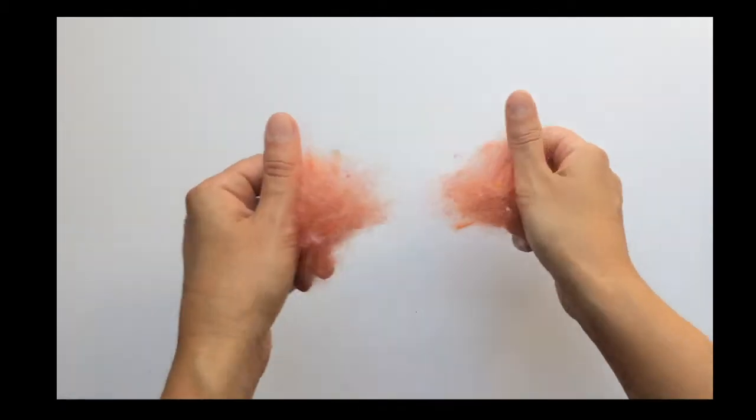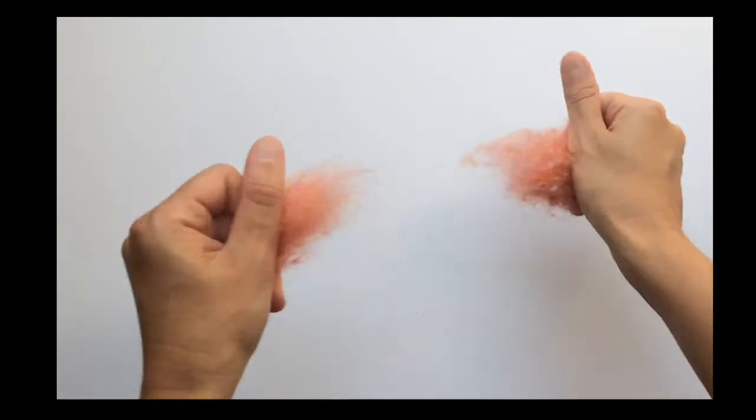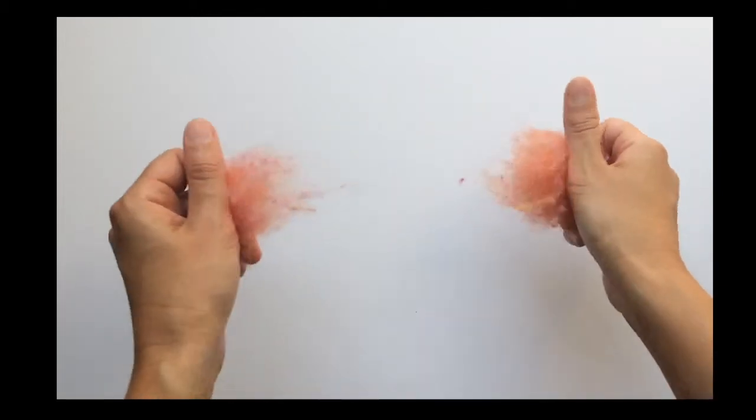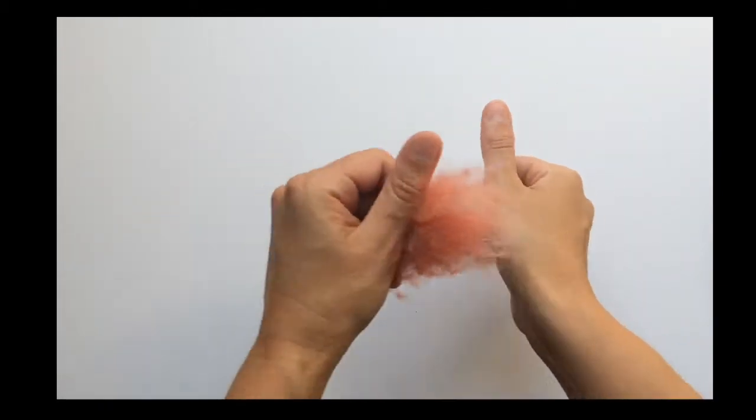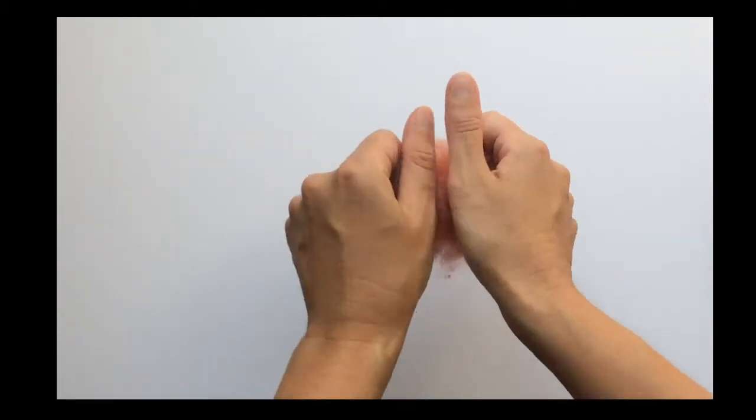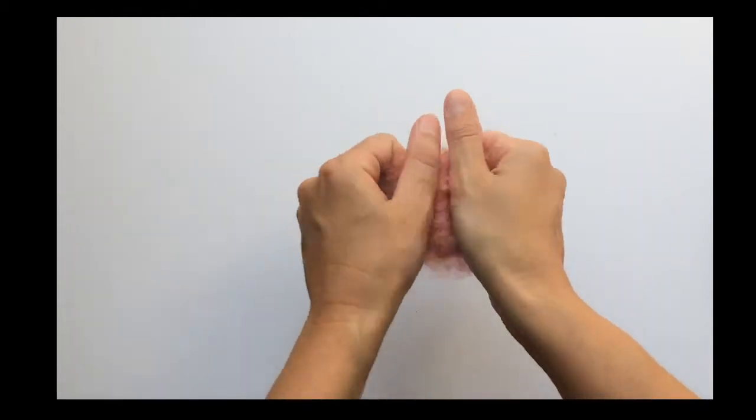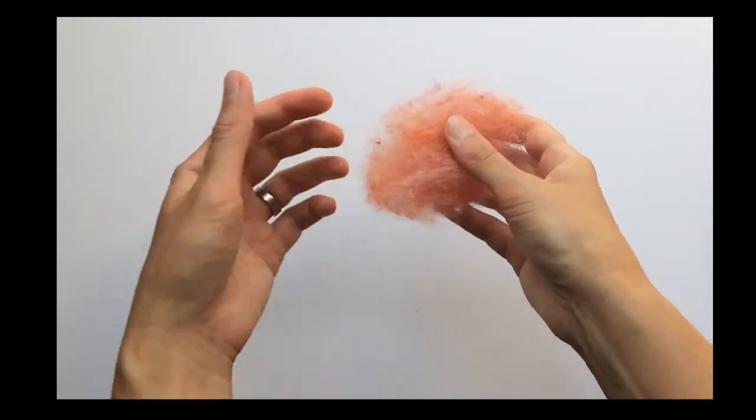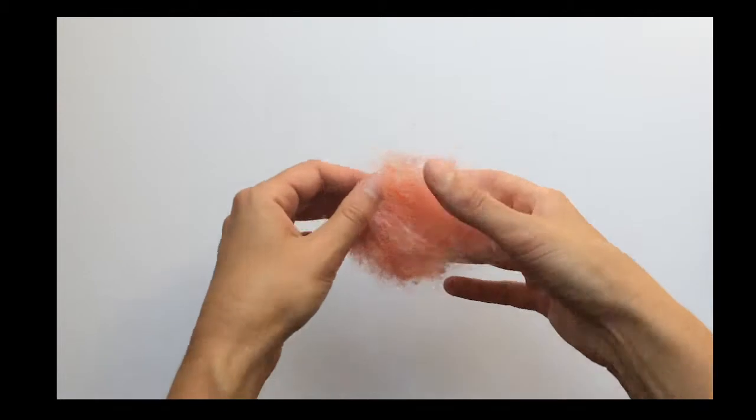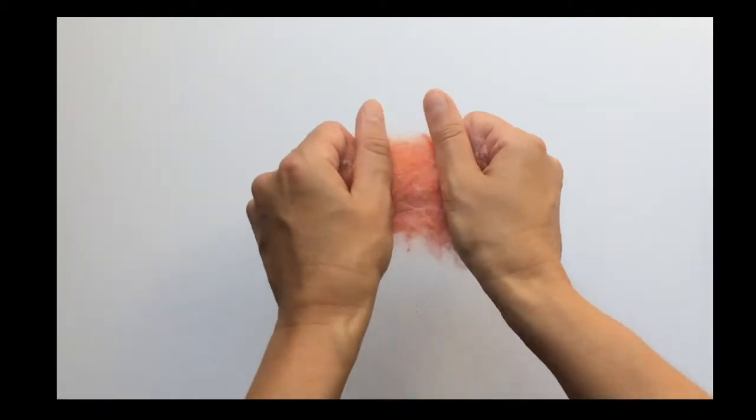But if you want it to be more consistent you'll just need to blend it until it reaches that point where you're satisfied with it. And if you like it to be more variegated and kind of marbleized you can stop at any point.